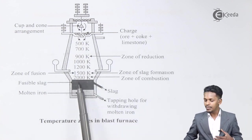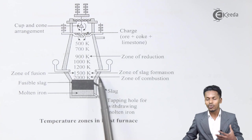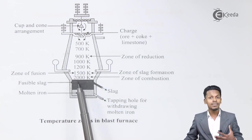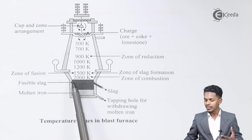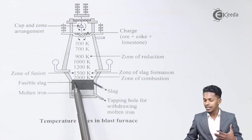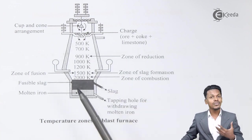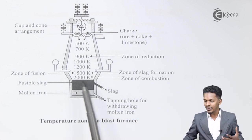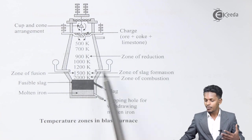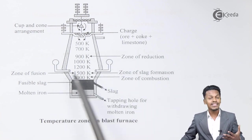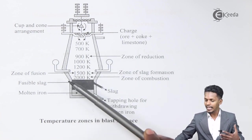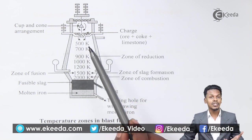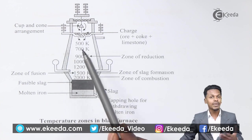As you can see, the lowest part is the hearth area, which is the hottest region. As we go upward, the temperature decreases from around 2000 Kelvin near the tuyere region to 1500 Kelvin, and further up to around 500 Kelvin at the top.